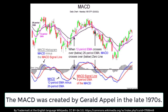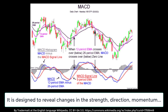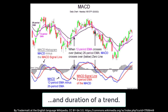This is a trading indicator created, according to Wikipedia, by Gerald Appel in the late 1970s. It was basically designed to reveal changes in strength, direction, momentum, and the duration of an actual trend.